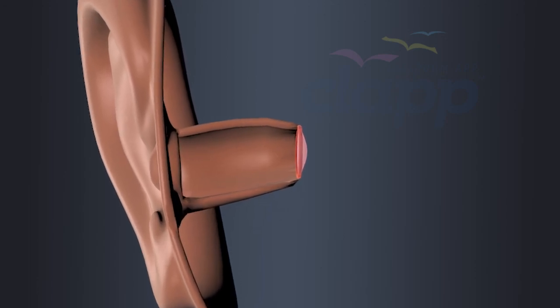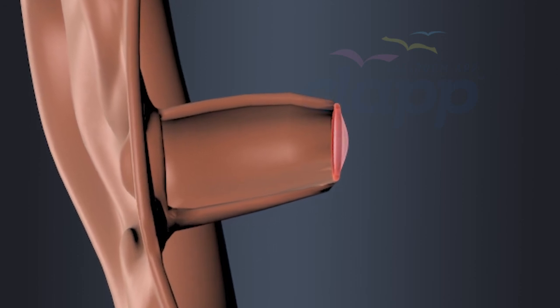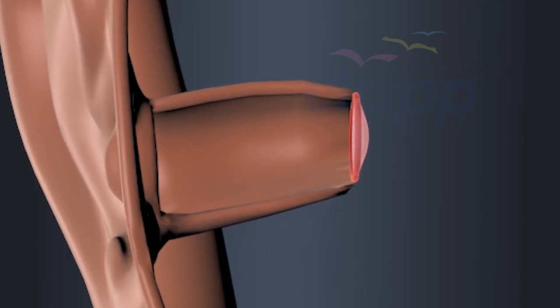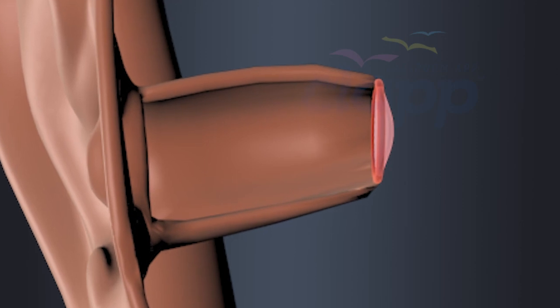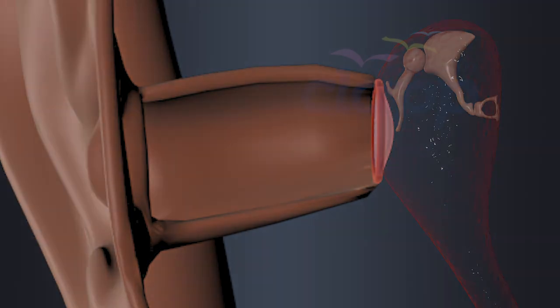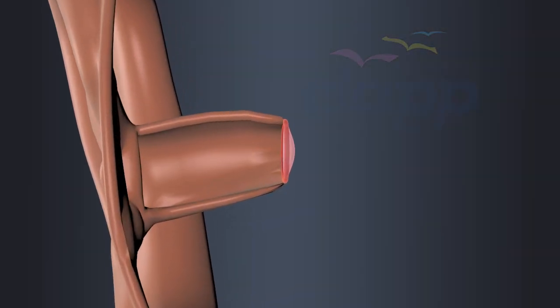Tympanum is a thin, semi-transparent membrane located at the end of the outer ear. It separates the outer ear from the middle ear. Tympanum is one of the essential structures of the hearing process.